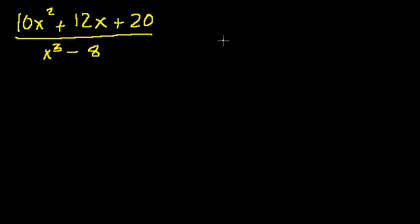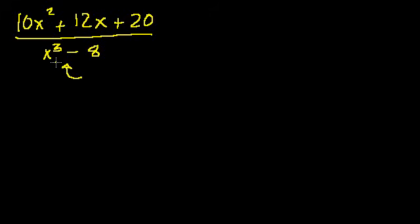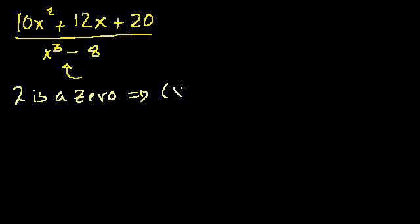The next thing, if we're going to decompose this into its components, we have to figure out the factors of the denominator so that we can use those factors as denominators in each component. A third degree polynomial is much harder to factor than a second degree polynomial normally. But here, you should think about what number, when substituted into the polynomial, makes it equal to 0. What to the third power minus 8 equals 0? The answer is 2 — 2 to the third minus 8 is 0. So x minus 2 is a factor.